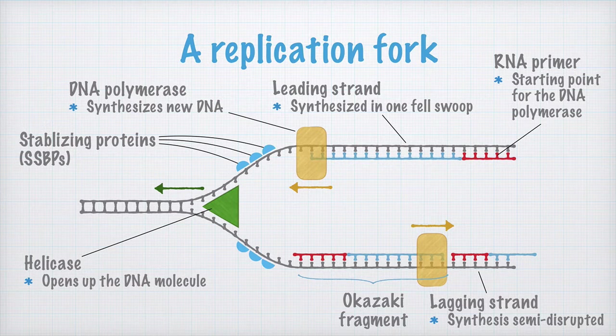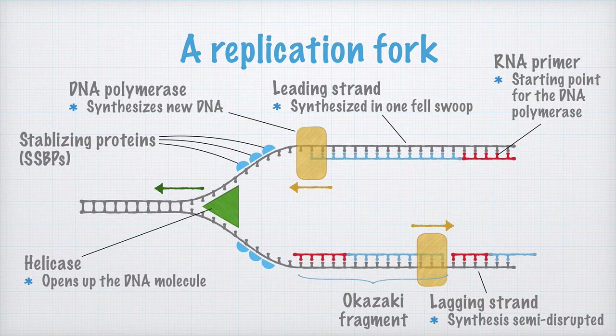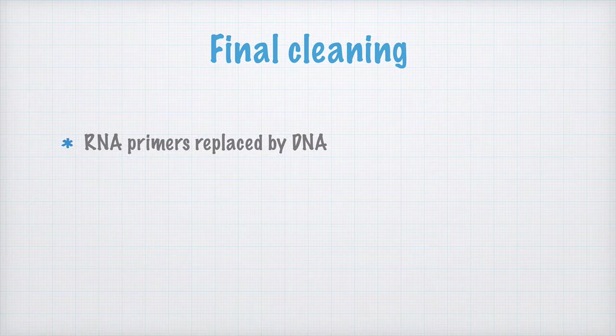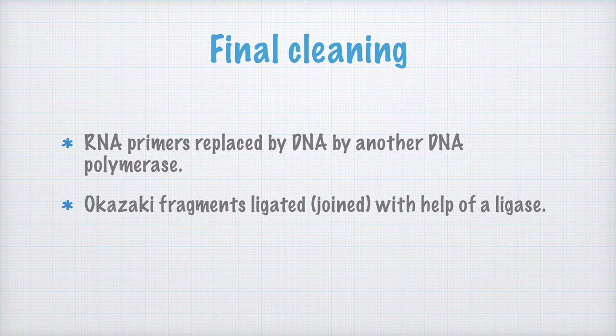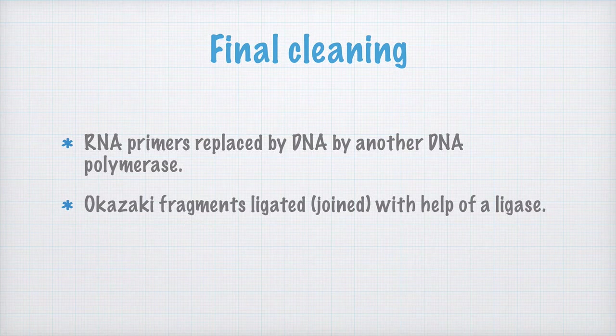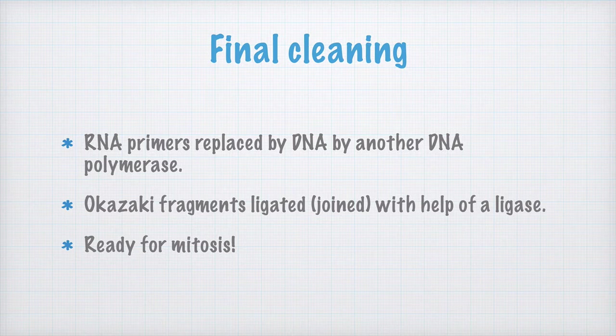Now the picture of the replication fork is finished, but there's still some work to do with the DNA before the cell may enter mitosis. It's time for some final cleaning. The RNA primers have to be replaced by DNA, which is carried out by another kind of DNA polymerase. Then, the Okazaki fragments must be ligated or joined together. This is done with the help of an enzyme called a ligase. And when two new shiny DNA molecules have formed, each one is an exact copy of the original, the cell is ready for mitosis. And that will be the subject for the next video.